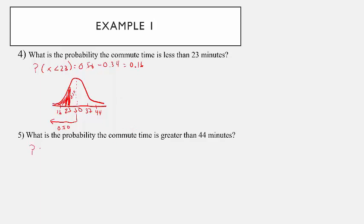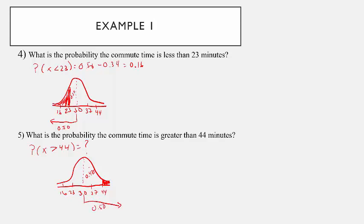What is the probability that the commute time is greater than 44 minutes? Sketching the density curve centered at 30, with standard deviations marked at 37, 44, 23, and 16, we shade the area to the right of 44. From the mean to two standard deviations is half of 95%, or 0.475. The total area to the right of the mean is 0.50, so we take away 0.475, giving us 0.025.